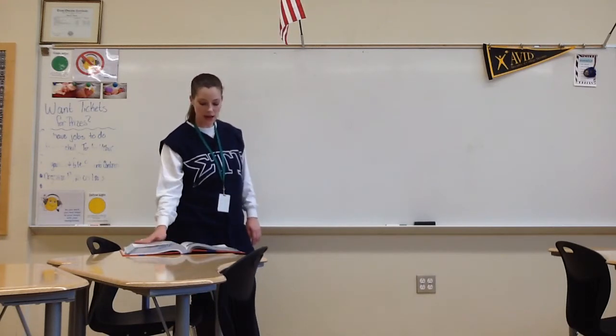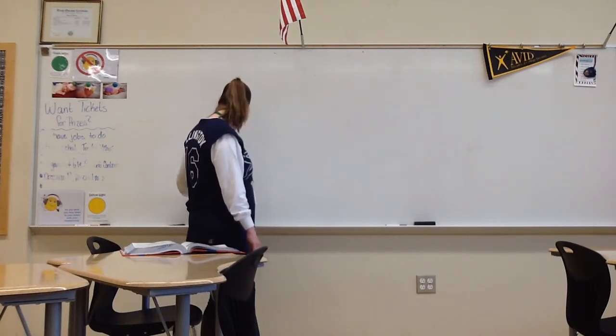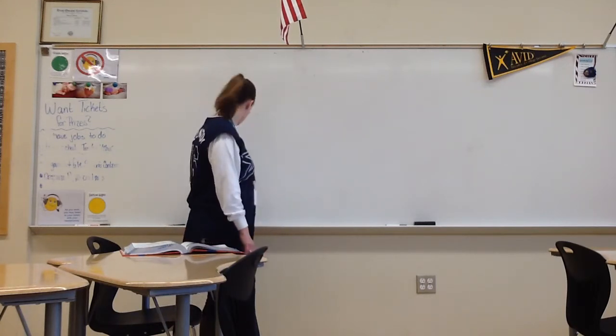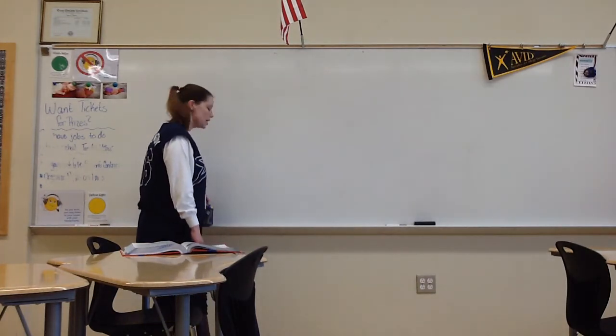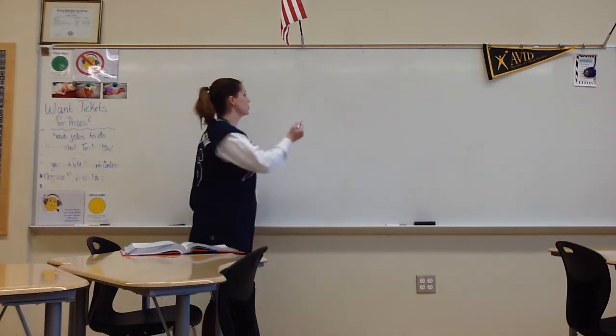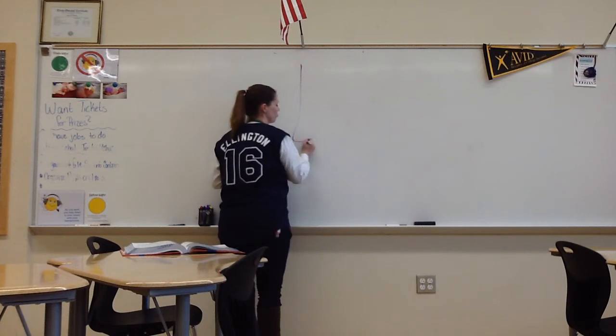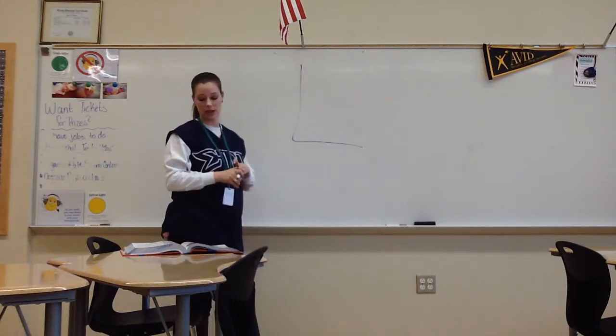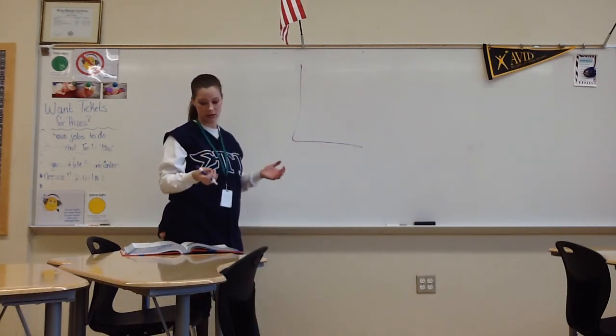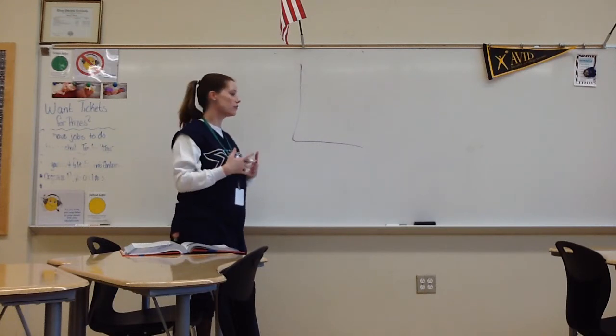Alright. Now, a scatter plot is, my markers are all missing. A scatter plot is a type of graph that looks like a function graph that is discrete. It looks like it just has a bunch of dots that aren't connected. It looks like a discrete function graph.